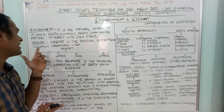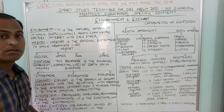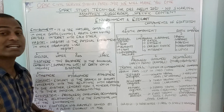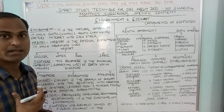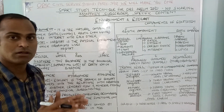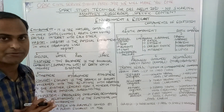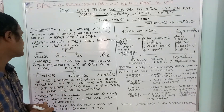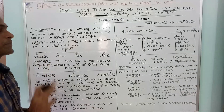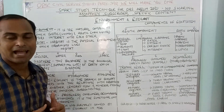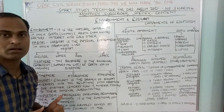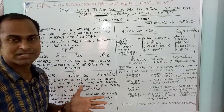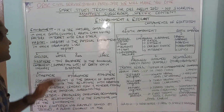Habitat is the physical environment in which an organism lives. For example, we as human beings live in a terrestrial environment — the Earth is our habitat. Habitat consists of four components: shelter, water, food, and space — whichever space we need for living.